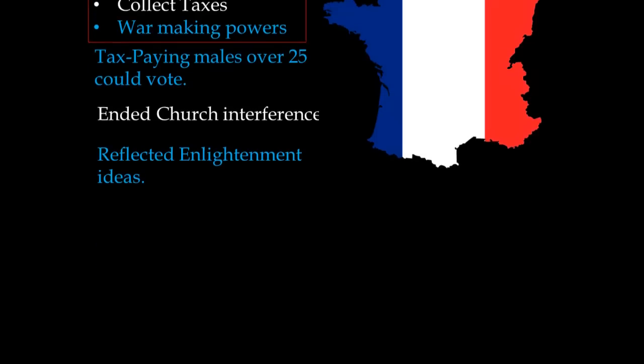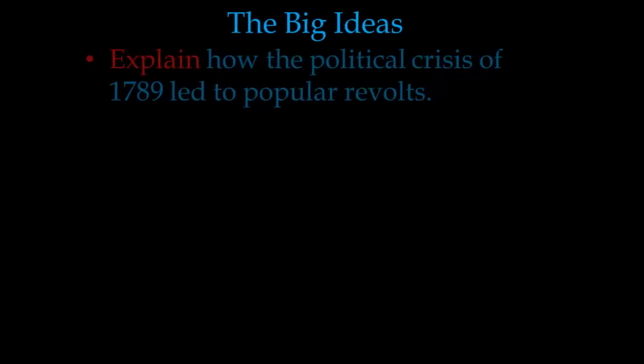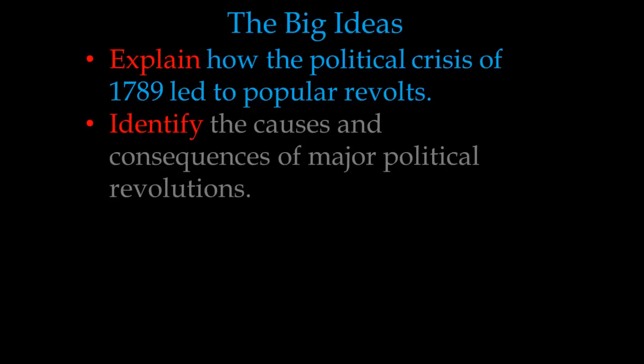To wrap up, let's look at our big ideas again. The first was explain how the political crisis of 1789 led to popular revolts — think about the taxes, the famine, and the overall unfairness in society. And then, identify the causes and consequences of major political revolutions. This is something we continue to look at, and hopefully you're starting to understand more and more of these causes and consequences.